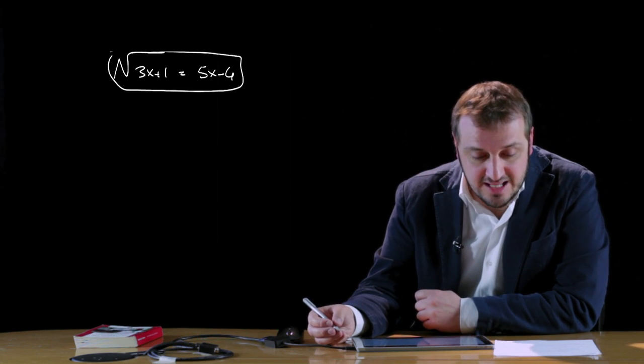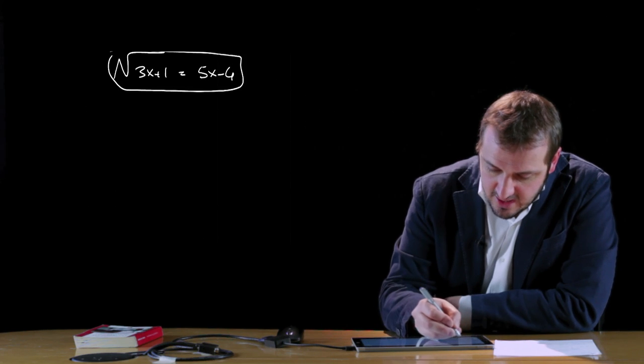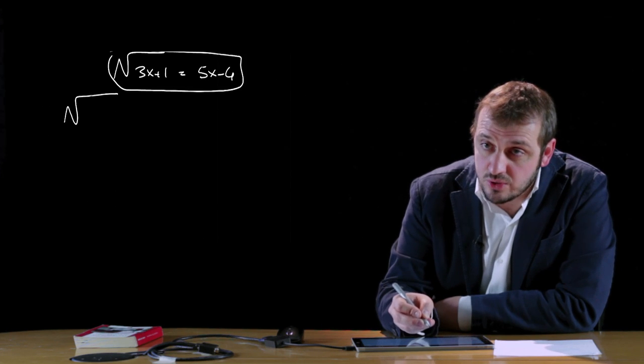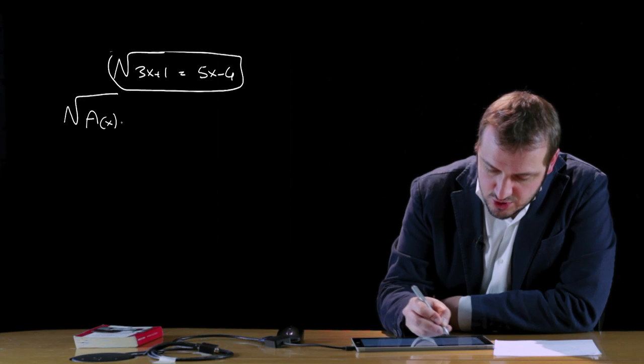Seguendo le condizioni di esistenza, quello che dobbiamo fare è ricondurre il problema alla soluzione di un'equazione razionale, ossia dobbiamo far sparire le radici, siano esse di indice pari o dispari. Per far questo dobbiamo isolare il radicale. Se nell'equazione ne esistono più di 1, è necessario reiterare lo stesso procedimento più volte. Isolare il radicale vuol dire ricondurre l'equazione irrazionale a una forma del tipo: radice di a(x) uguale b(x).